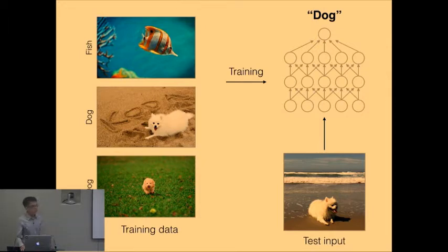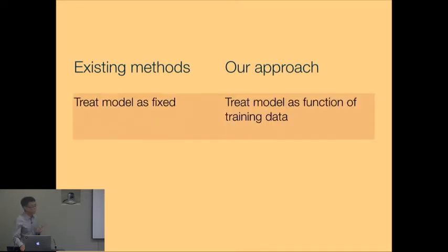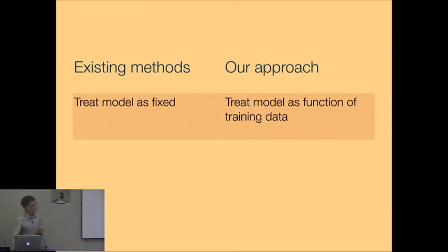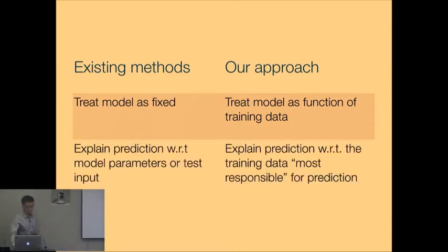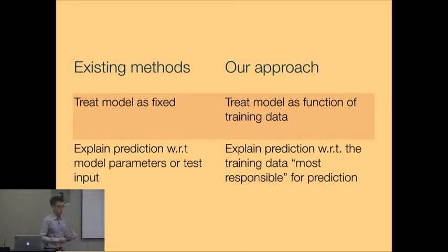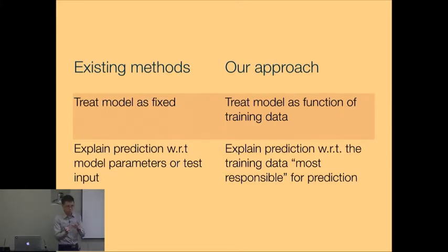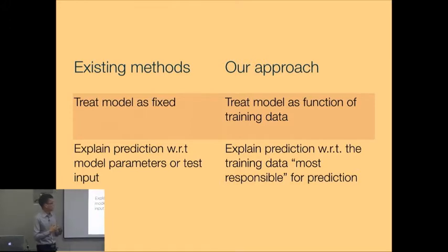This is the central point of our work. Most existing methods treat the model as something that's already learned, whereas we treat the model as a function of the training data. So whereas existing methods can explain the prediction with respect to certain model parameters — like the model made this prediction because the coefficient on this feature is high — or in terms of the test input, like which region is important, what we try to do is explain the prediction with respect to the training data that was most responsible for a given prediction.